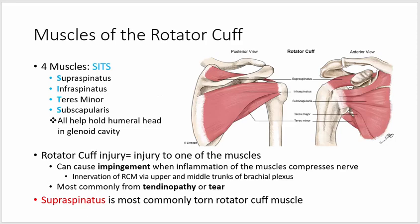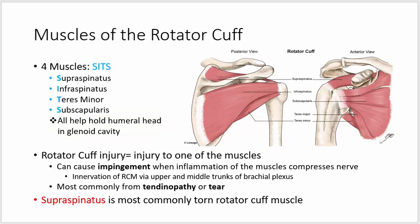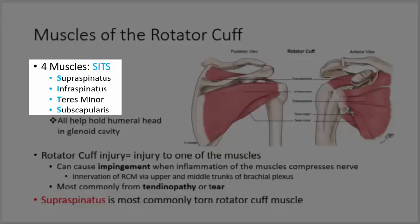Recall that the rotator cuff is comprised of four muscles, all of which help firmly hold our arm bone, the humerus, in the shallow socket of the shoulder called the glenoid. There are four muscles of the rotator cuff that can be easily remembered by the acronym SITS: S for supraspinatus, I for infraspinatus, T for teres minor, and S for subscapularis.